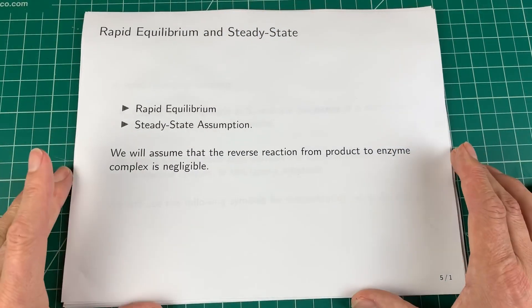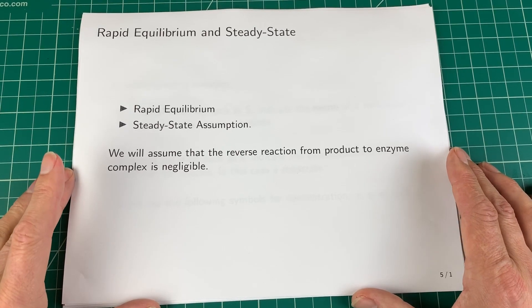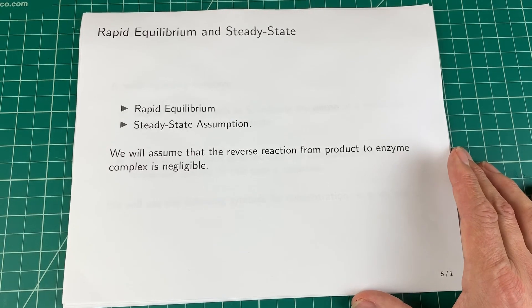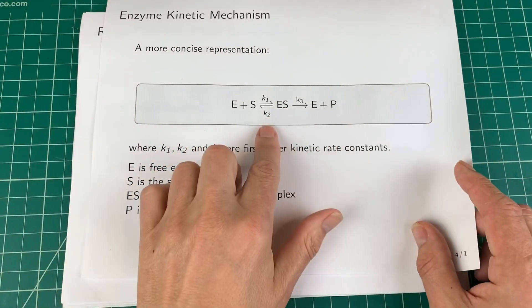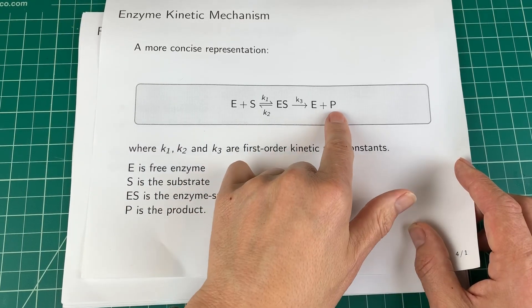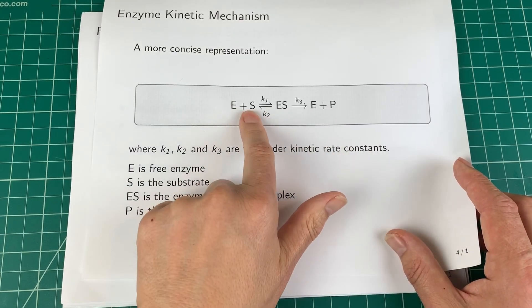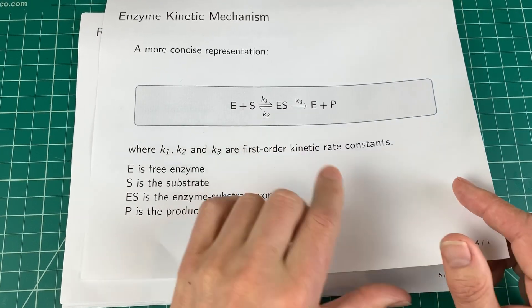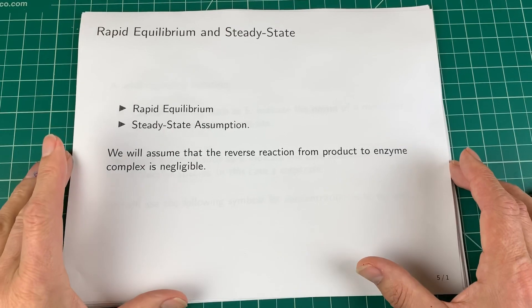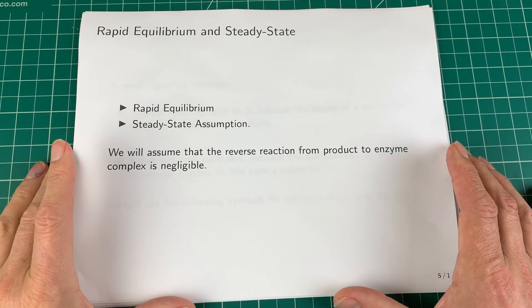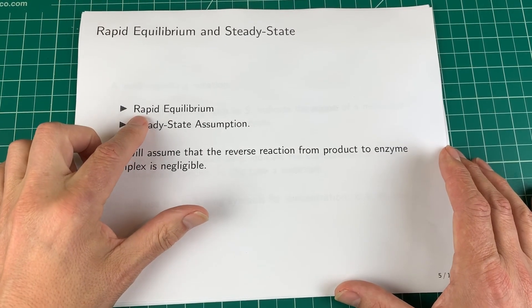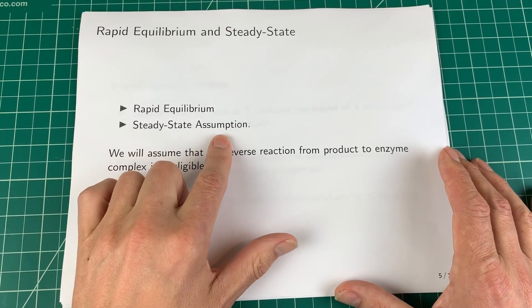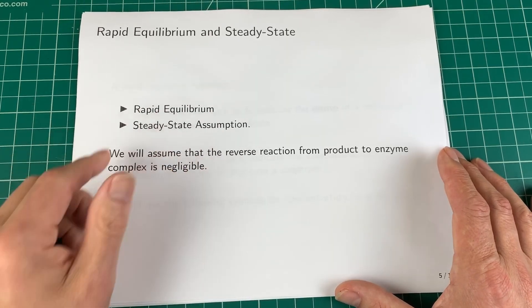To answer that initial question — how is the rate of reaction determined by the concentration of substrate — we need to do some simplifications. I basically want an expression for how fast product is made as a function of substrate. There are two such simplifications: one called rapid equilibrium, first proposed around 1913, and a second one called the steady state assumption, proposed about a decade later.